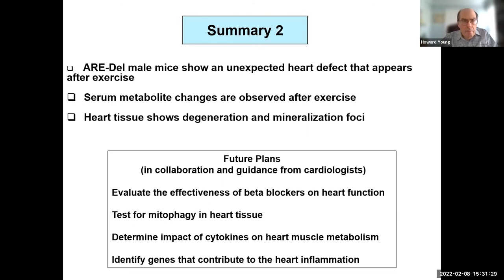Summary: the ARE-DEL male mice show an unexpected heart defect that appears after exercise. Serum metabolite changes are observed after exercise, and heart tissue shows degeneration and mineralization foci. John is looking at the effects of beta blockers, which seem to overcome some of this, and we're working with Danielle Springer at the Heart Institute and Sam Das from Hopkins. We want to test for mitophagy in heart tissue and are working with a German company that has human heart organoids to see the effects of gamma interferon on organoid function.